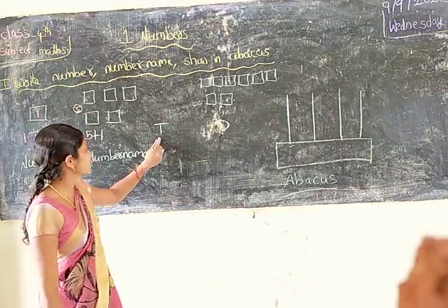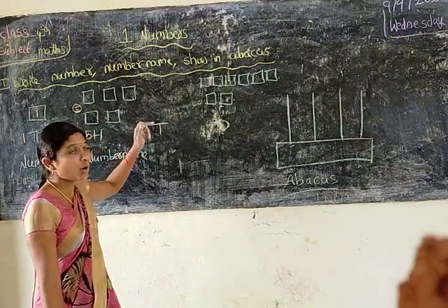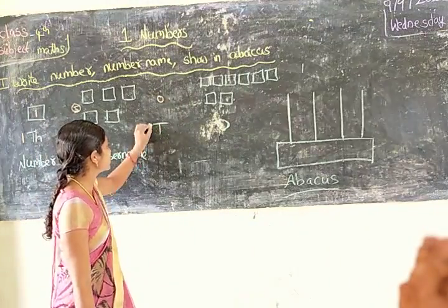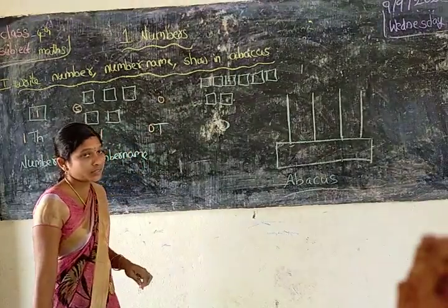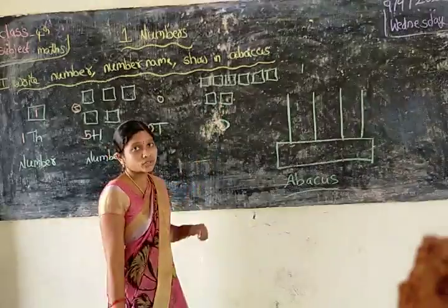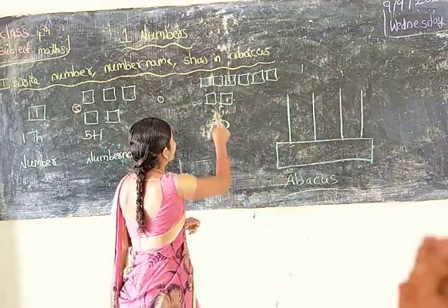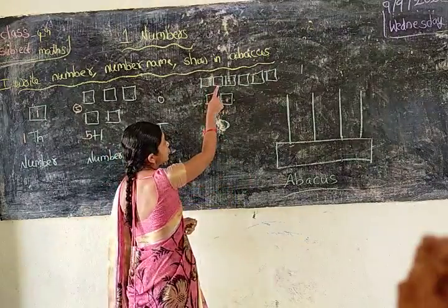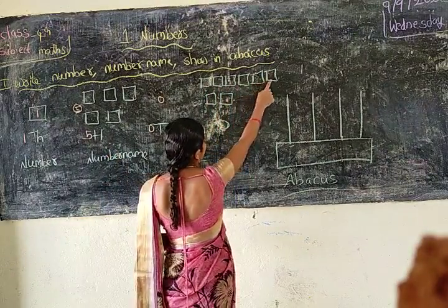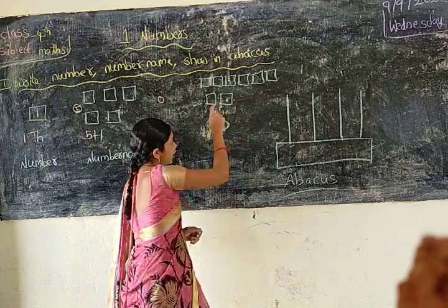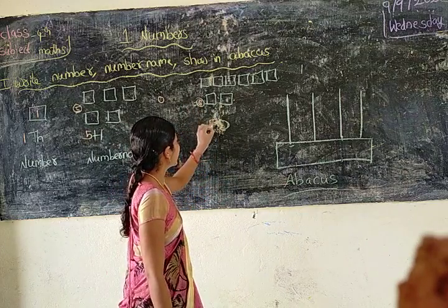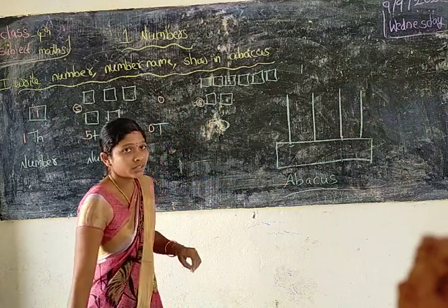In tens, how many boxes are there? No boxes. So zero — that is zero tens. And in the ones place, how many are there? One, two, three, four, five, six, seven, eight. Eight boxes are there. So eight ones.